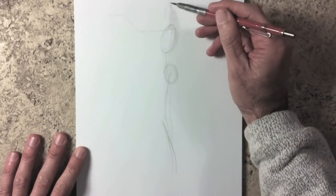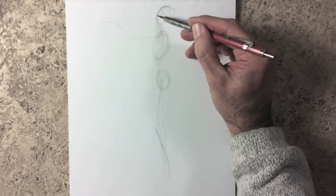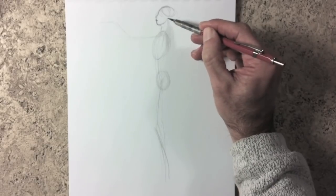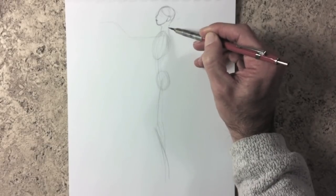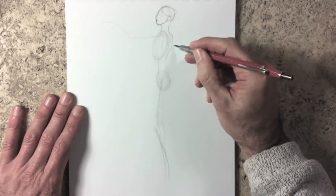For a head in profile, you can start it with two ovals. One pretty much vertical, and the other one horizontal. Remember that the eyes are at the center, height wise. Then we start shaping the body.